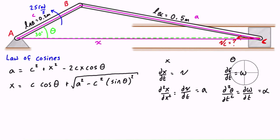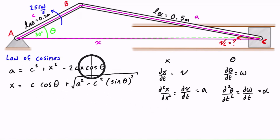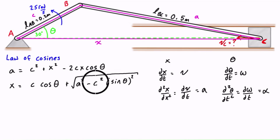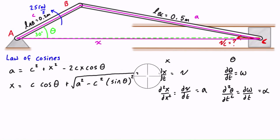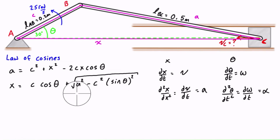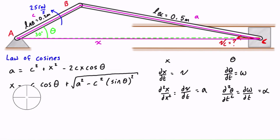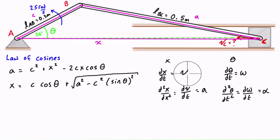In this problem we have constant angular velocity, so when you take the derivative of a constant angular velocity the angular acceleration is zero. Once you've identified the expression, you can pretty much just plug in your values and work through to the end to get the answer for vc.